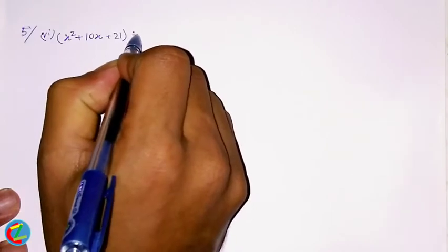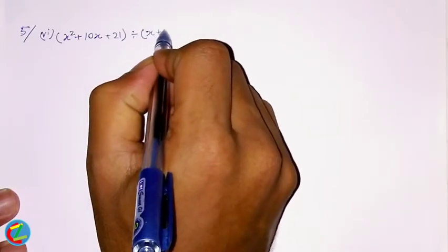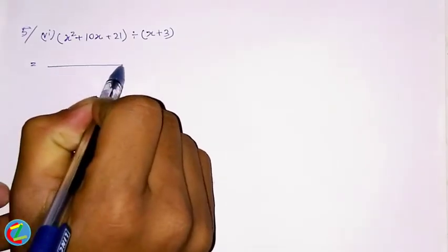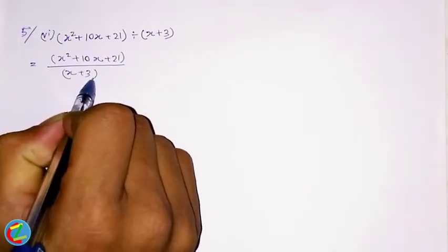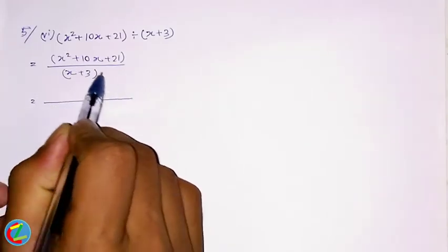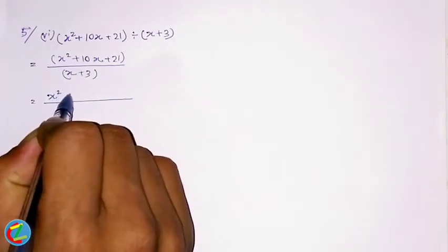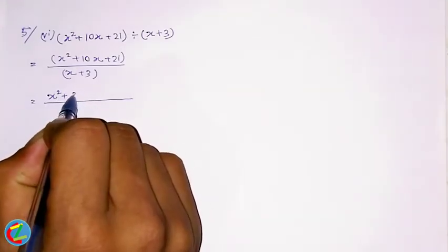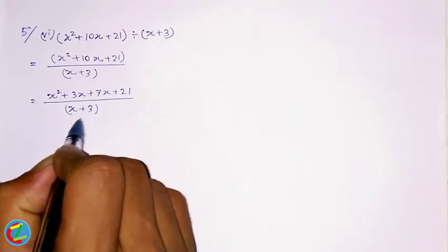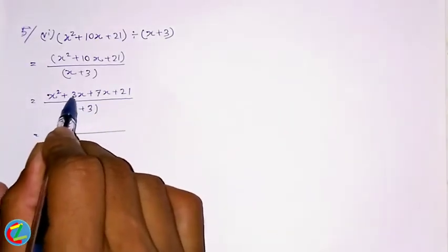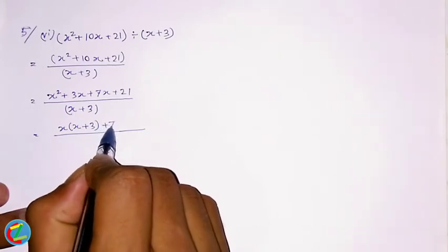This problem is x² + 10x + 21, and we will have x + 3. Now we will have to fix this. We will put this x, 2x is the only 2x². Then 3x + 7x is the objective. So this is x² + x + 3 is the objective.